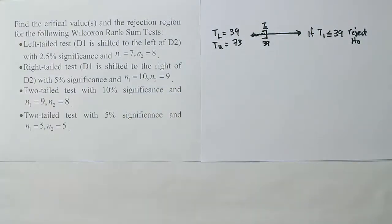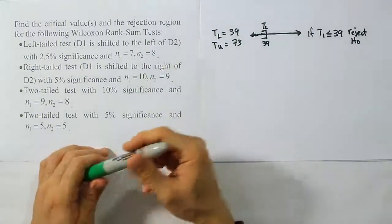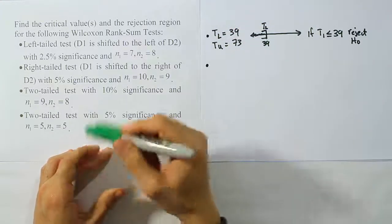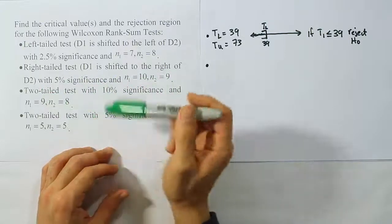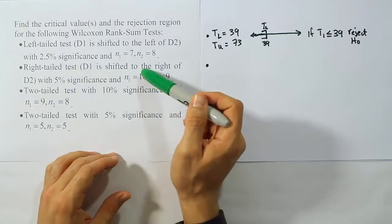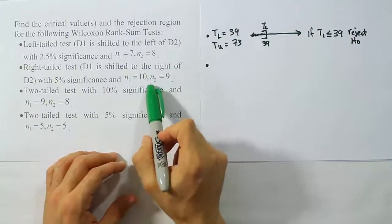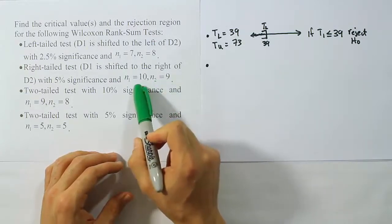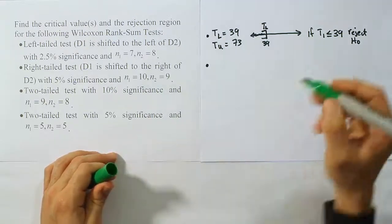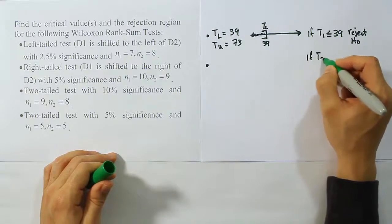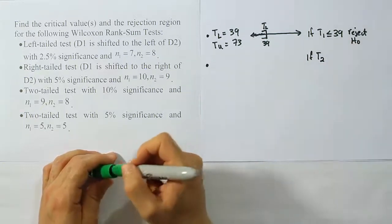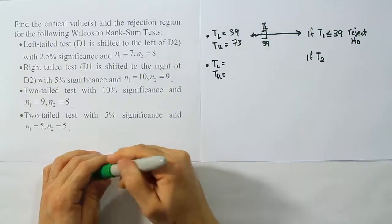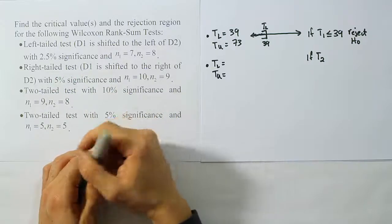Our second case is a right-tailed test where D1 is shifted to the right of D2, with 5% significance, N1 equals 10, N2 equals 9. Our test statistic will be T2 because N2 is smaller than N1. We'll get TL and TU from our table for sample sizes 9 and 10 with 5% significance in a one-tailed test.